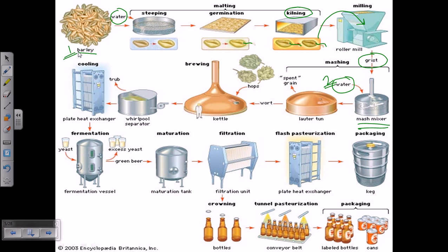Water is added here in the mash mixer. The grist — the powder portion of the malts — is mixed thoroughly with water in the mash mixer. What it produces is called a mash. Mash means we are having a malt-and-water mixture.